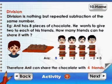Division is nothing but repeated subtraction of the same number. Anil has 8 pieces of chocolate. He wants to give 2 pieces of chocolate to each of his friends. How many friends can he share it with? Therefore, Anil can share the chocolate with 4 friends.